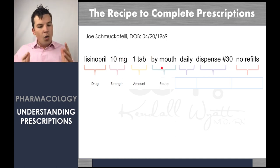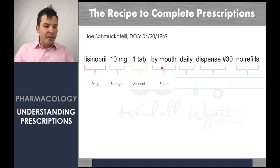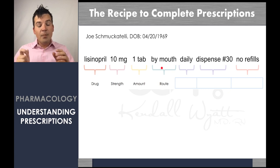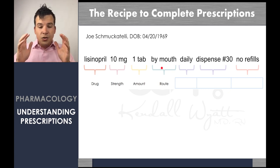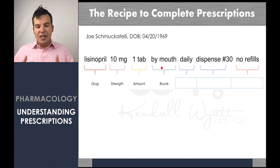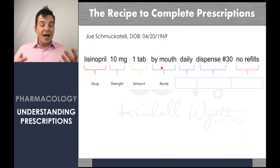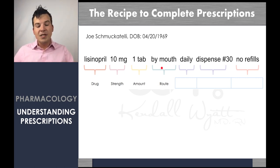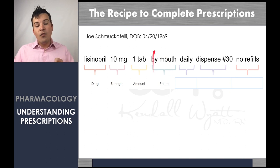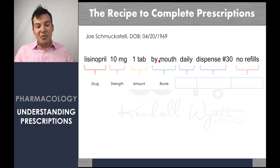The next thing is the route. There are lots of different routes to give medication — that's covered in a separate fundamentals pharmacology video. For lisinopril, it's a tablet and the tablet goes in the mouth, so the route is by mouth. When I can't remember an abbreviation, I just write it out. For example, I always write out 'rectally' for suppositories because I can never remember that PR is the abbreviation. We wouldn't want to give lisinopril rectally — it's not going to have a good therapeutic effect.